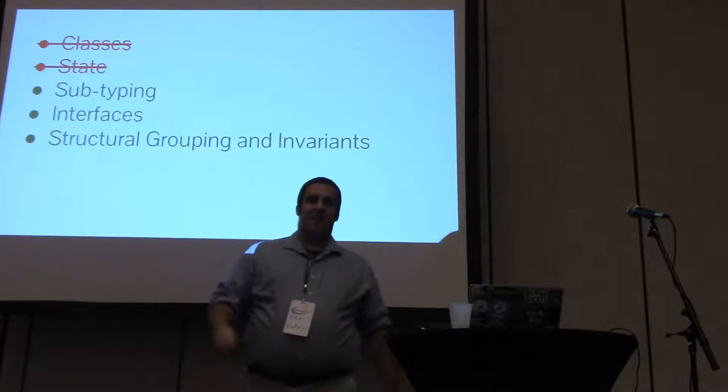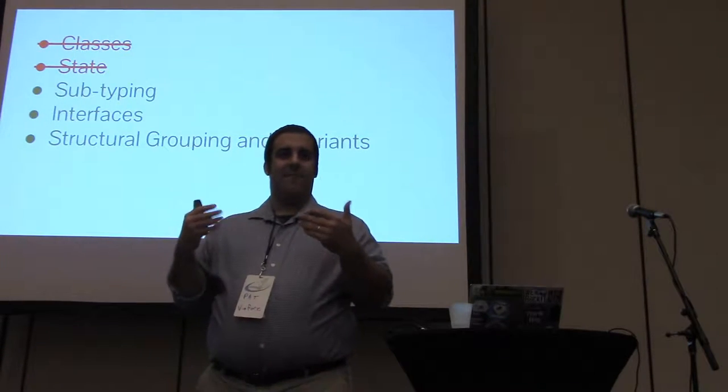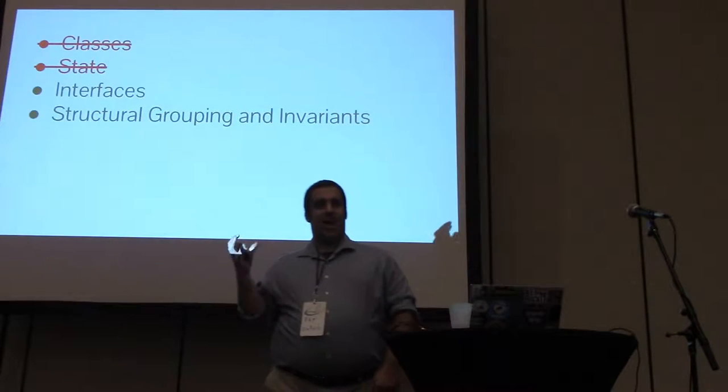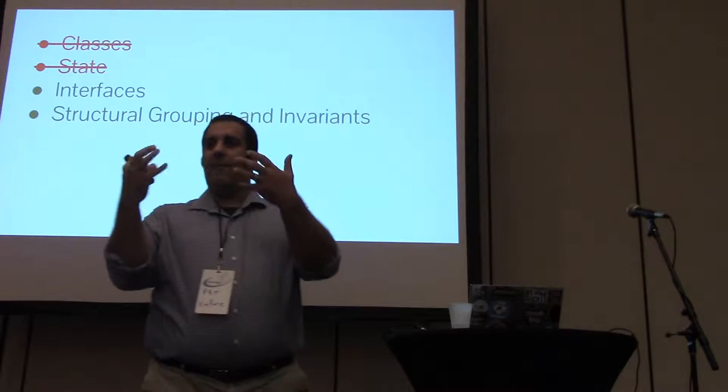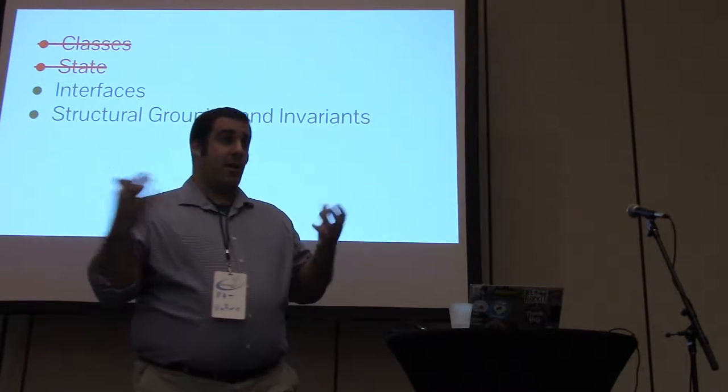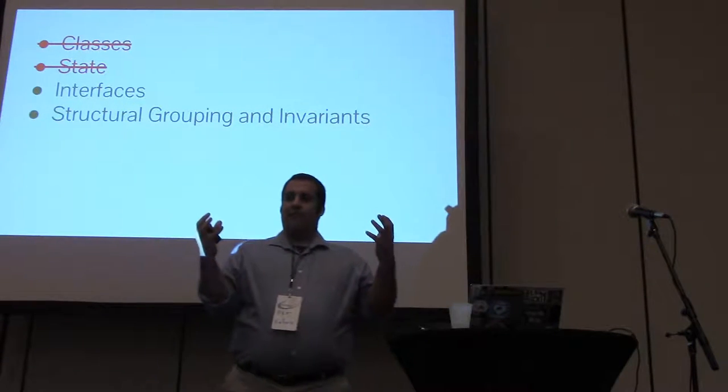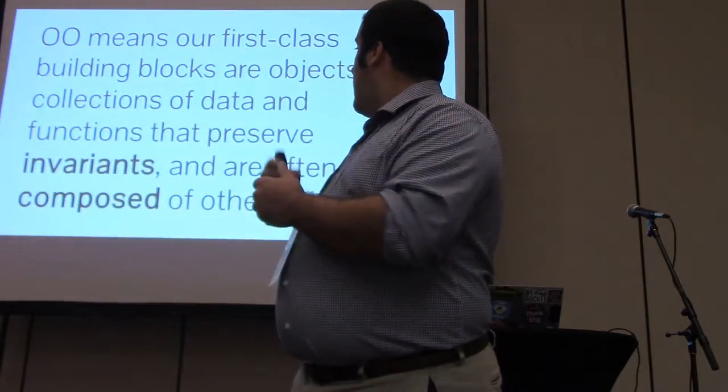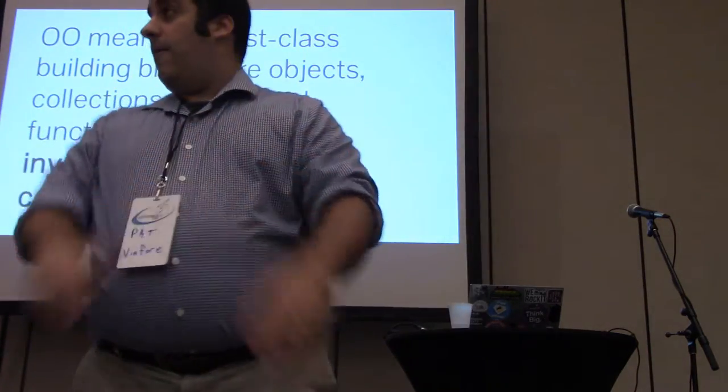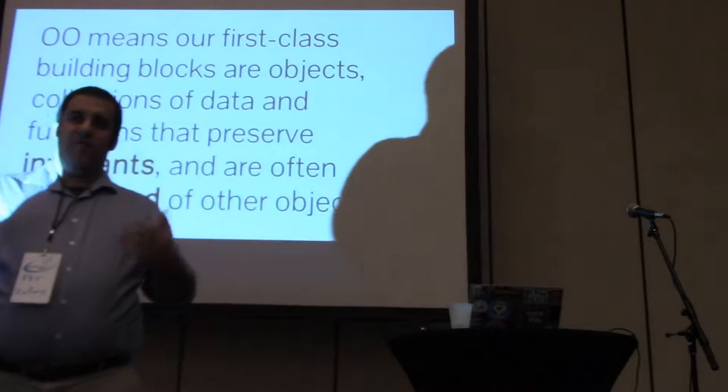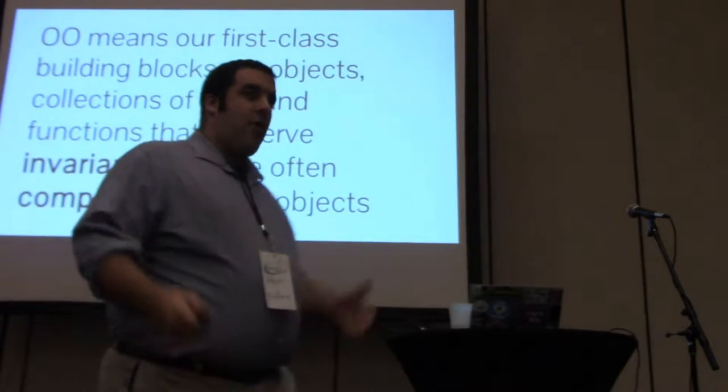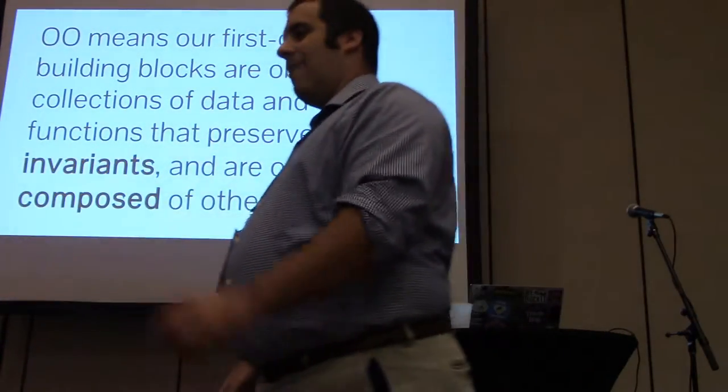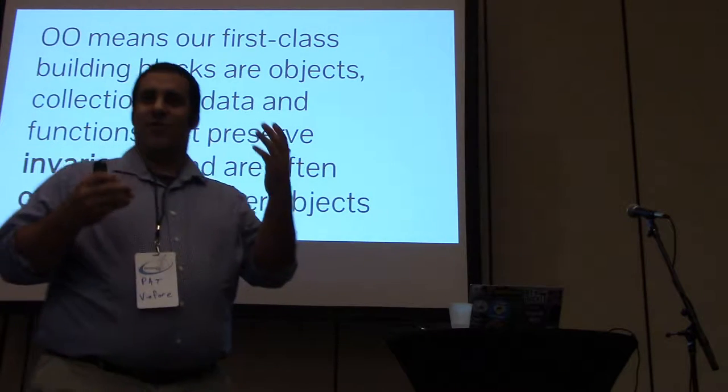I'm going to distill object-oriented code down even further to I have some interfaces, I have some structural grouping and invariants. Object-oriented are first class building blocks where you have objects which are just data and functions that operate on that data. They preserve invariants. So there are certain things that you might care about that always must be true in your program. And they are often composed of other objects.